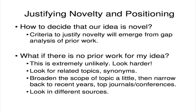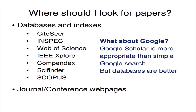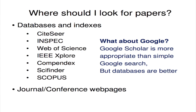You need to look in different sources. The next question that arises is: where should you look for these papers? There are lots of databases and indexes useful for academic publishing. These slides will be posted up. All you need to keep in mind is that you should look in databases. Some of you may have thought that Google is the end-all of search — that is not true for research papers. Google Scholar is more appropriate than a simple Google search, but searching in databases is much better. You can also search in journal or conference web pages.